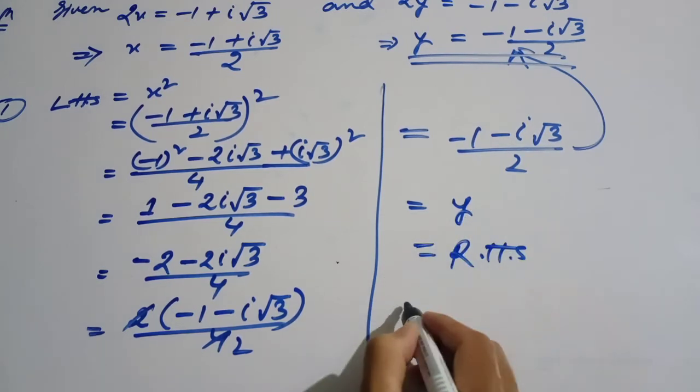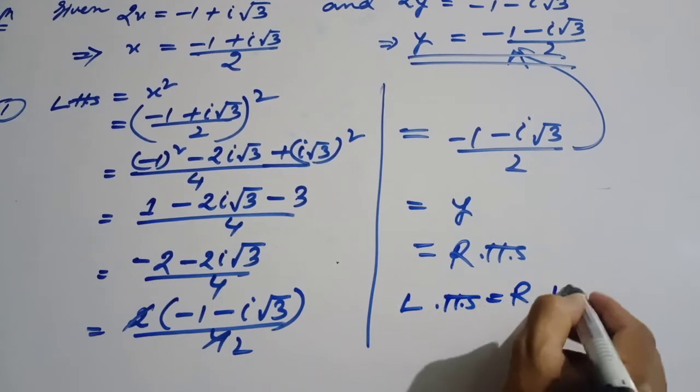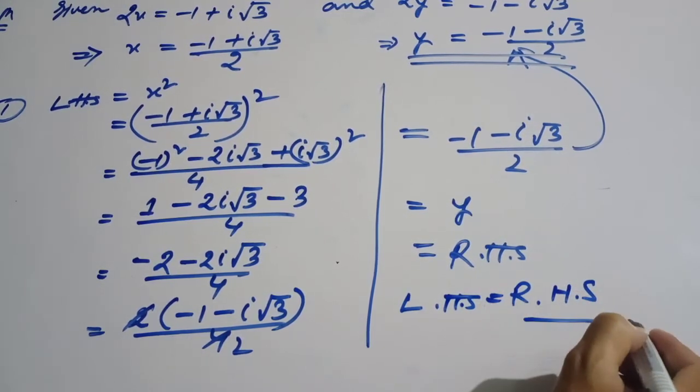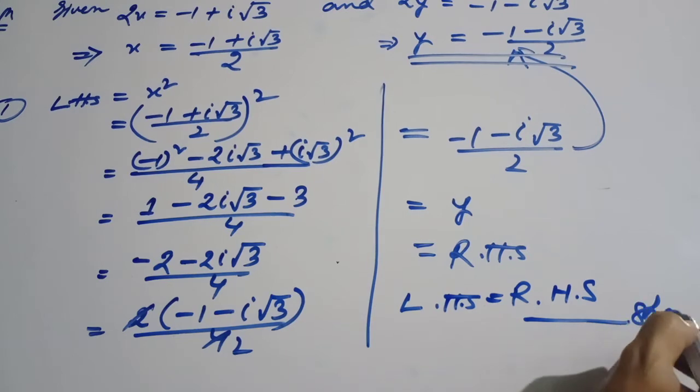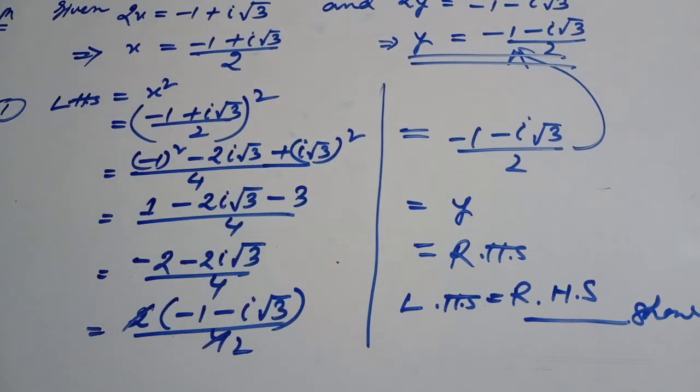Minus 1 minus 1, plus i. You get what you get. Left hand side equal to right hand side.